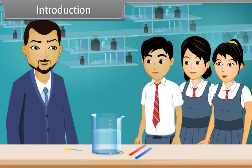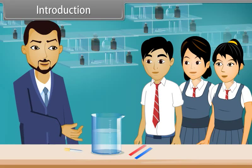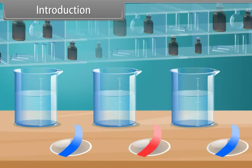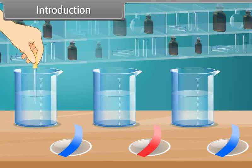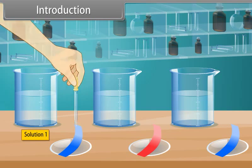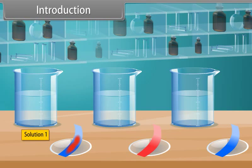Hello students. Good morning sir. Very good morning. Today we will perform an experiment to identify the acidic, basic, or neutral solution. First, put a drop of solution 1 on the blue litmus paper. It turns into red.